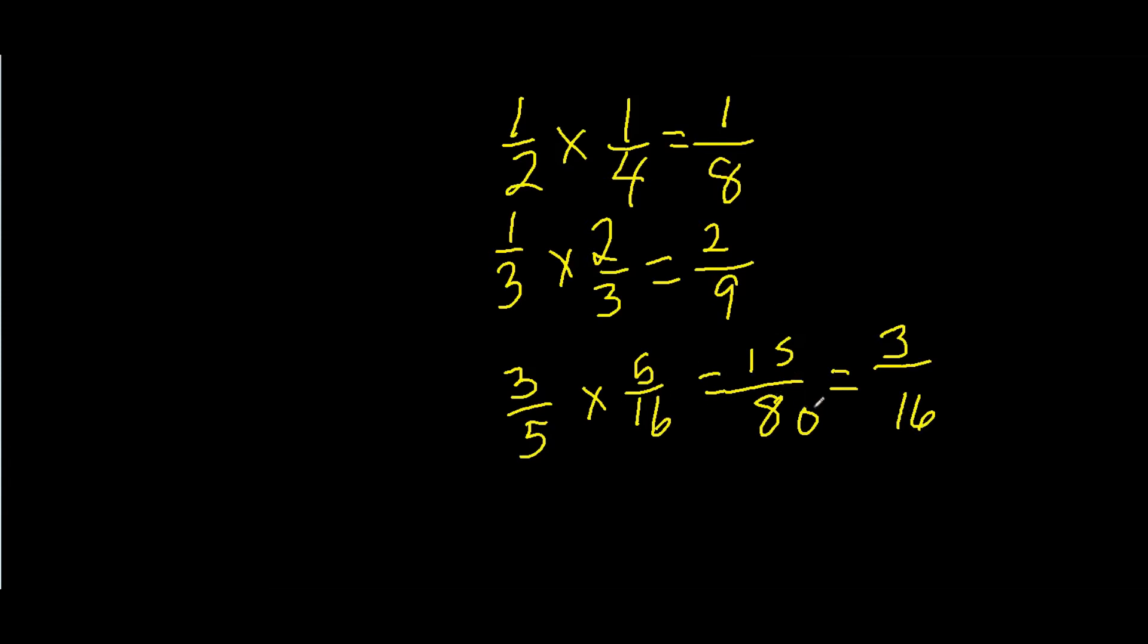Another fairly large number. We have 5 sixths times 12 fifths. So, 12 times 5 is 60. And, 5 times 6 is 30. So, you have a larger numerator than you do a denominator. So, how many times will 30 go into 60? 30 will go into 60 two times evenly.